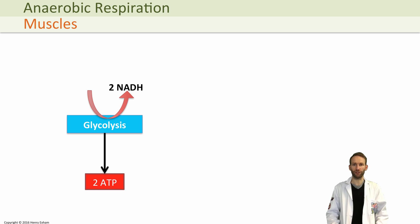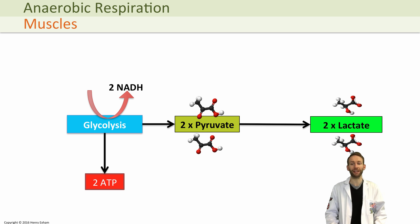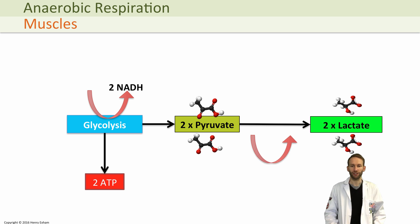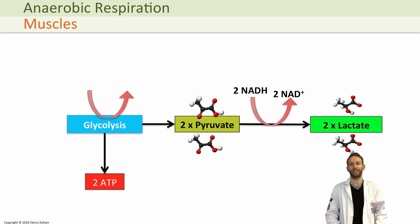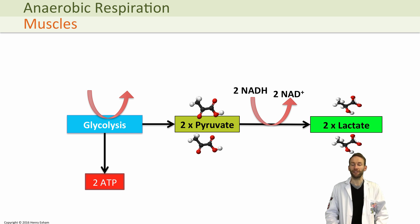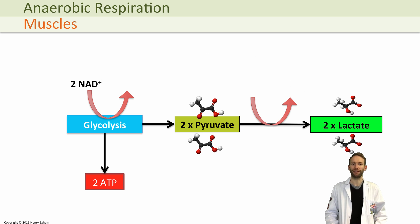Without oxygen, the pyruvate produced in glycolysis is converted to another molecule called lactate. To convert pyruvate to lactate, you actually need to use two NADH molecules, and we can use the two that were produced in glycolysis. We're going to oxidise those back to the NAD they started as, which means the NADH can go back into glycolysis again and be reduced to produce two more ATPs.